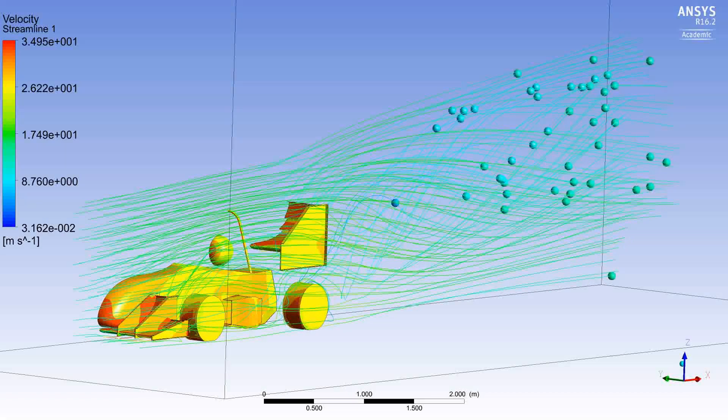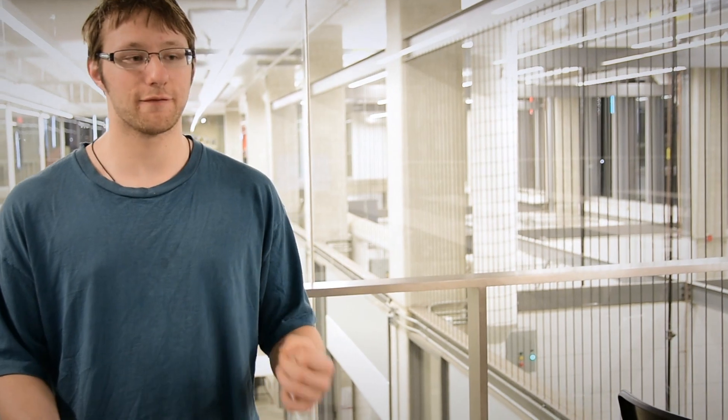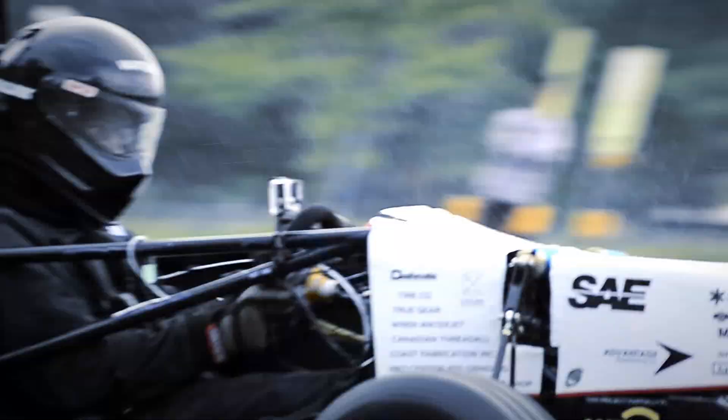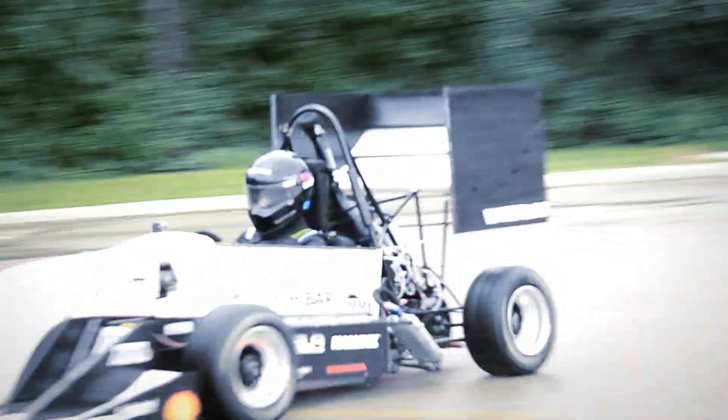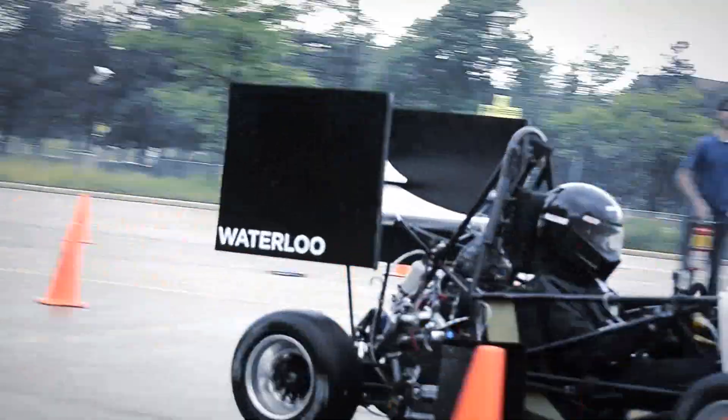Thanks to ANSYS's software, this year's aerodynamics system generates approximately 80% more downforce, while only generating 40% more drag. Our vehicle dynamics calculations show that this is worth approximately half a second per lap. For reference, this is about three to five places at the top level of competition.